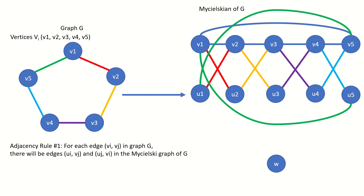Note that the vertex u1 is connected to the same v vertices in the Mycielsky graph as v1, that is vertices v2 and v5. And the vertex u2 connects to the same v vertices as vertex v2, that is vertices v1 and v3. This is another way of defining the connections: the vertex ui corresponding to a vertex vi connects to the same v vertices as vi. This will be important later in the video.